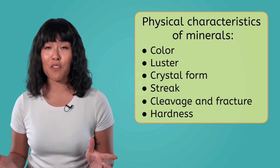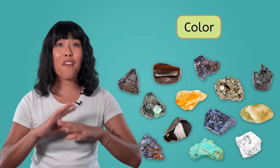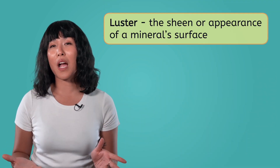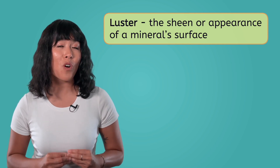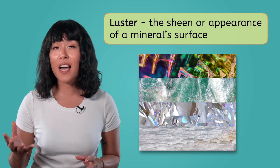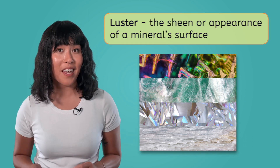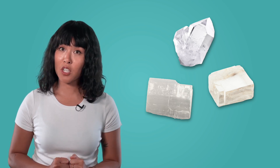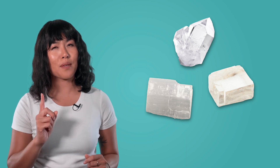Some characteristics of minerals are pretty straightforward, like their color. Minerals can be every color of the rainbow. We can also describe a mineral by its luster, which is the sheen or appearance of its surface. It might be glassy, dull, metallic, pearlescent, waxy, silky, or even greasy looking. Unfortunately, all my minerals are the same clear color and have the same glassy luster, so let's keep going.